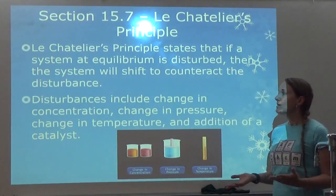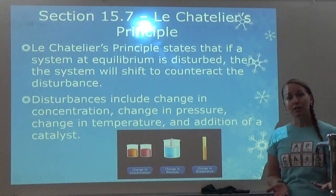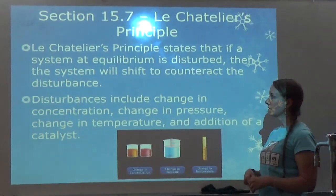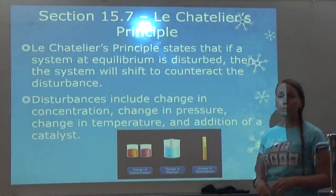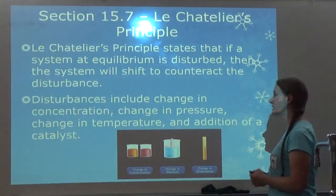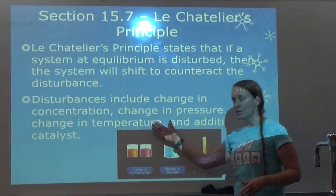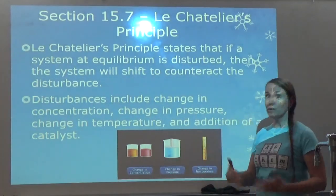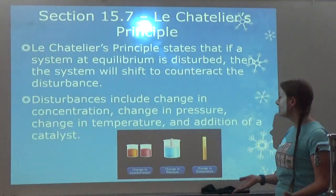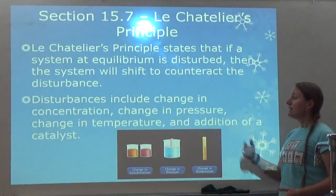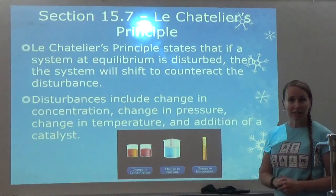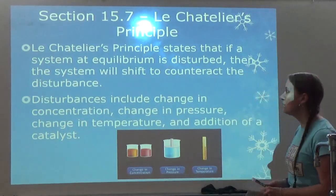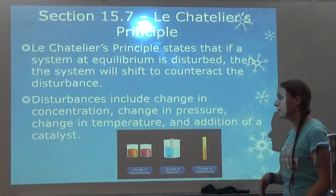Disturbances include things like a change in concentration — we can increase or decrease — a change in pressure, we can increase or decrease, a change in temperature, we can increase or decrease, and the addition of a catalyst. Those are ways that we can disturb something at equilibrium.